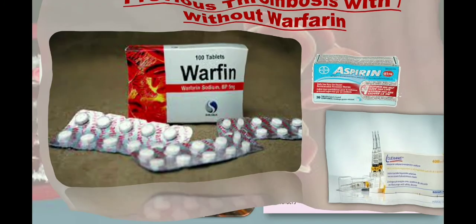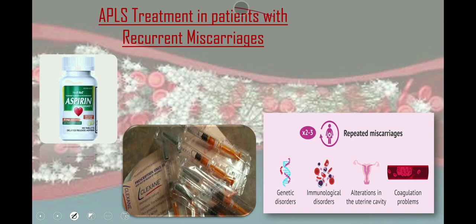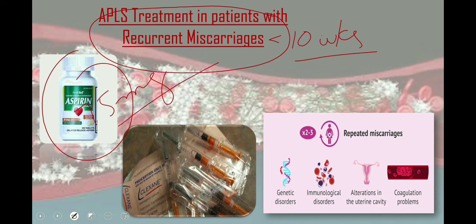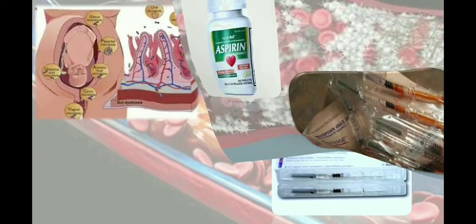For recurrent miscarriages of less than 10 weeks: if the patient is not on prior anticoagulant therapy, start aspirin 75 mg once daily from preconception. If there is prior miscarriage with aspirin alone, start aspirin 75 mg once daily from preconception and add low molecular weight heparin enoxaparin 40 mg once daily once the pregnancy is confirmed.